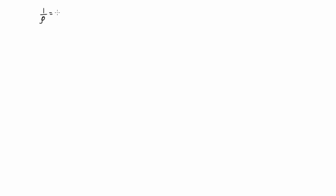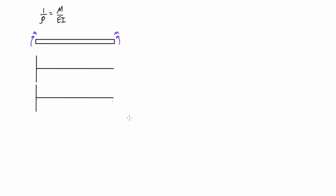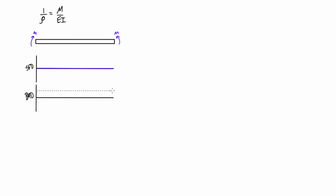To get started, let's remember what we were talking about with pure bending. We had this expression where 1 over rho is equal to M over EI. This basically comes from if we had a typical beam and we're applying only pure bending to it — so an externally applied moment on each end — and if we draw the shear force and bending moment diagram, we get that constant internal moment.